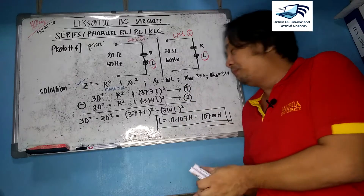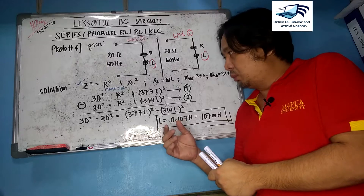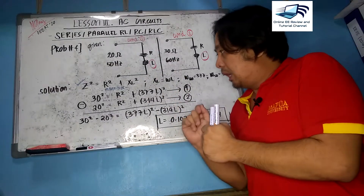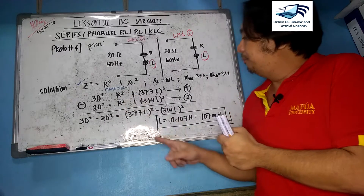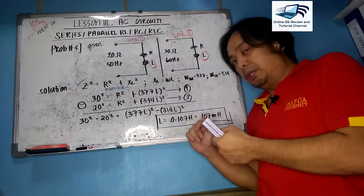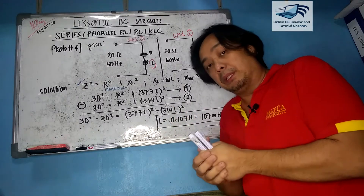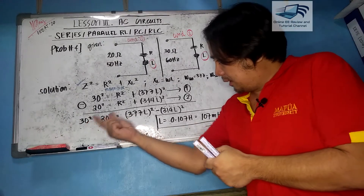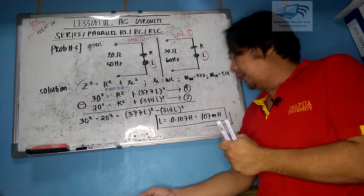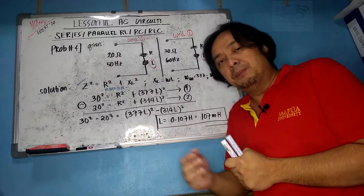Substituting: equation 1 gives 20² = R² + (314L)², and equation 2 gives 30² = R² + (377L)². Subtracting equation 1 from equation 2 eliminates R, leaving 30² − 20² = (377L)² − (314L)². Using algebra, we solve for L and get L = 107 millihenry. A straightforward problem once the two-equation approach is established.